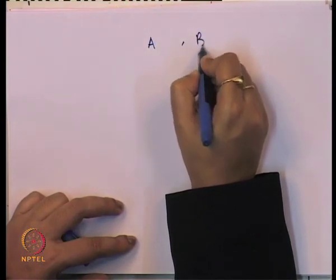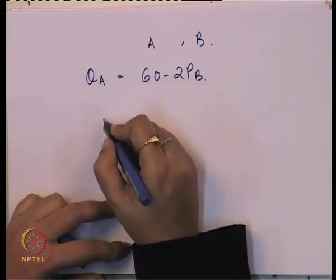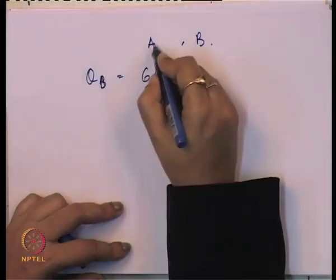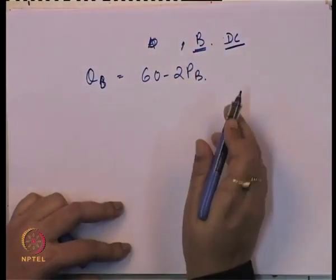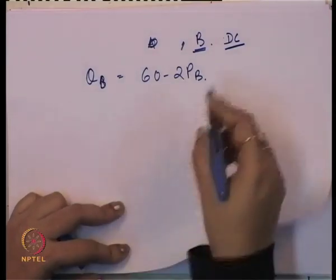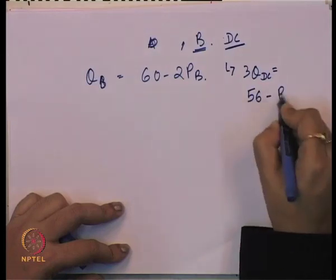Now we will take a numerical example to understand third degree price discrimination — how price discrimination leads to different prices compared to when price discrimination is not practiced. Suppose there are two markets, B and DC. The demand function for B is Q_B = 60 − 2P_B, and for DC the demand function is 3Q_DC = 56 − P_DC.